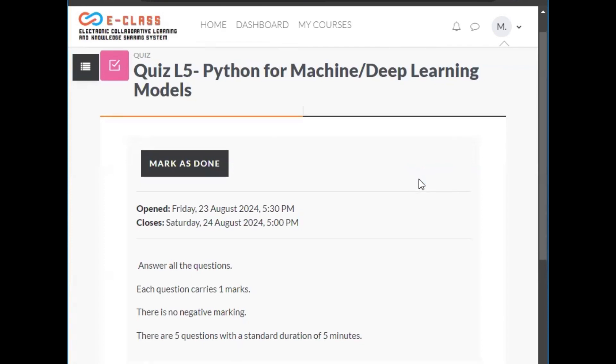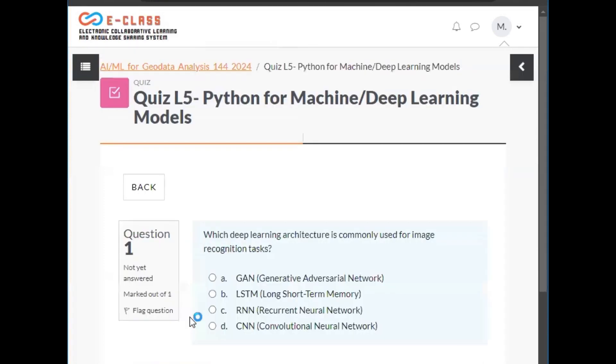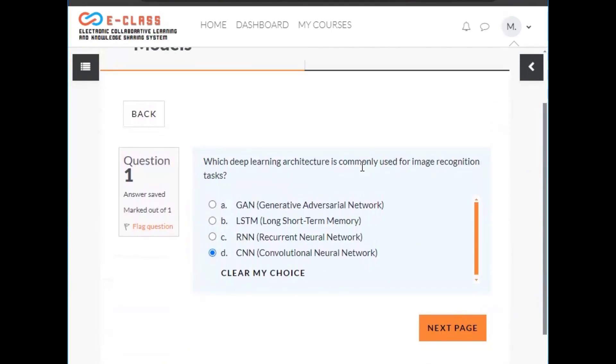This is Quiz 5: Python for Machine and Deep Learning Models. Which deep learning architecture is commonly used for image recognition tasks? CNN - Convolutional Neural Network.